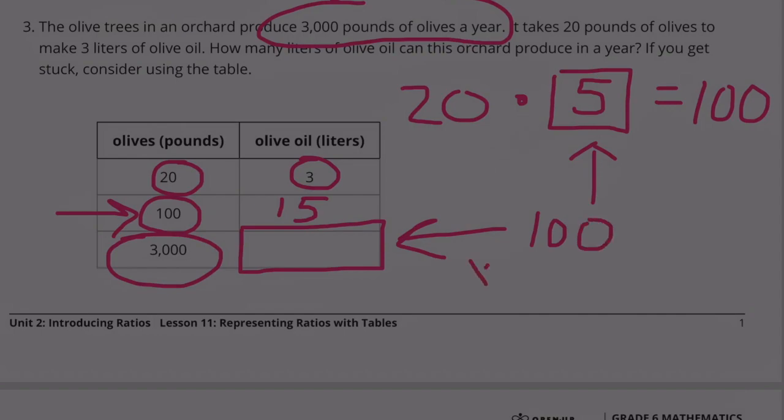100 times what number equals 3,000? That would be 30. 100 times 30 equals 3,000. So if we multiplied 100 times 30 to get 3,000, we'd have to multiply 15 times 30.